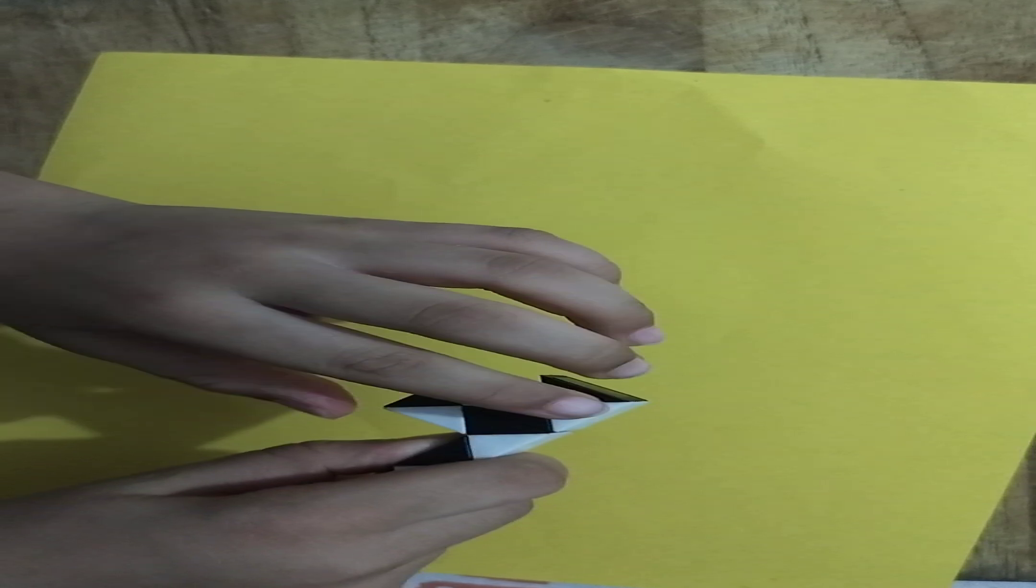again, you just twist it. You will get something like this. Next, you take it to make a shape, something like this. Next, over here you do the same thing. Yeah, now you will get something like this.